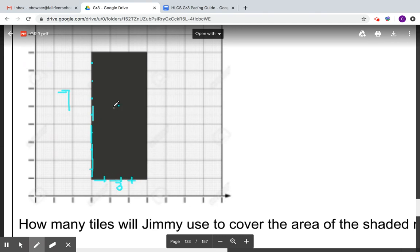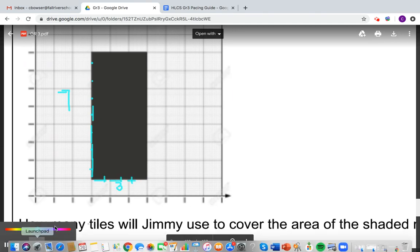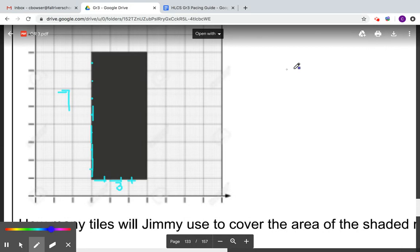So one, two, three. So my formula I would write, let me get a different color so it's easier to see, is three times seven equals what? That's what I want to figure out.